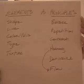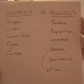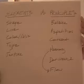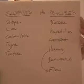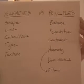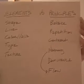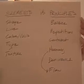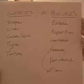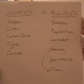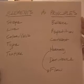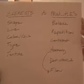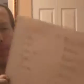In principles, there's all kinds of different principles. I've just noted a couple: balance, repetition, contrast, harmony, dominance and flow — dominance and flow and harmony kind of go together. So your building blocks on the left side are used with principles on the right to make good design, or bad design.